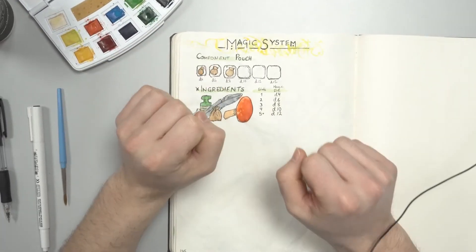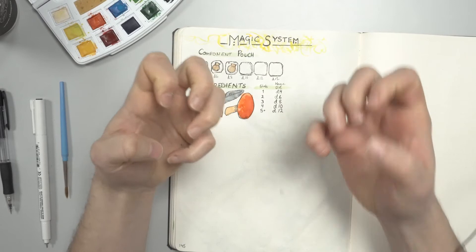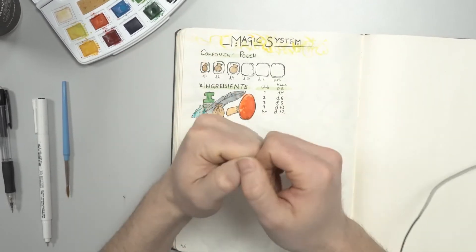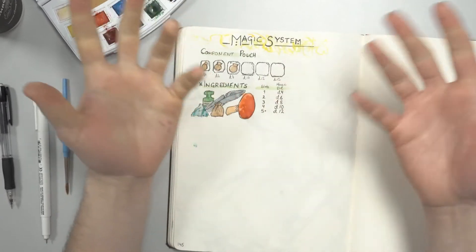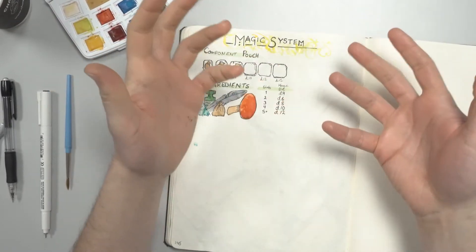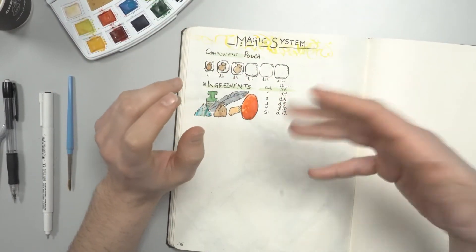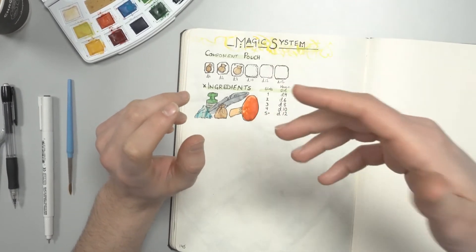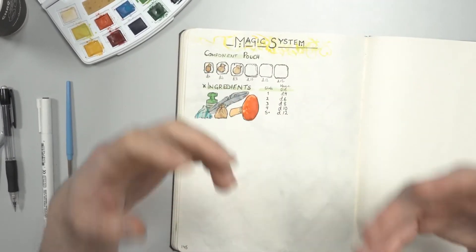But I hear you say, 'I want to cast high level spells at the final boss.' Well, I have a fix. Ingredients can be found in the wild. I don't have a specific mechanic for it, but I'll add a way for you to forage for more ingredients.